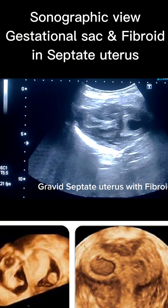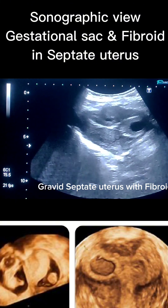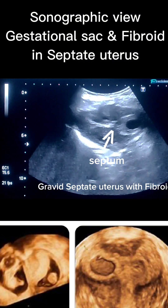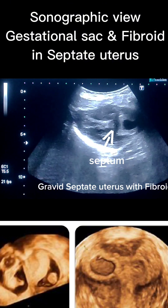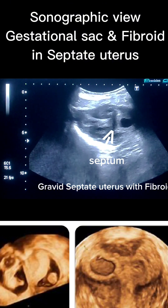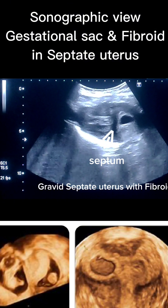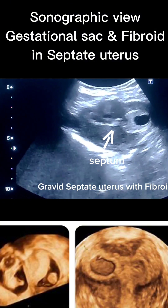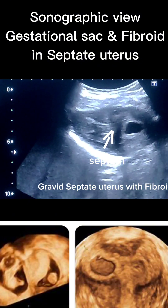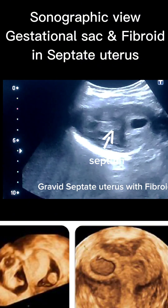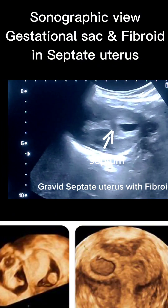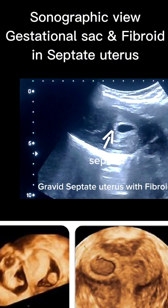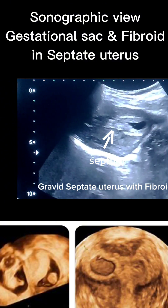On scanning, the uterus appeared abnormally shaped with a fibrous echogenic band running along the midline of the endometrial cavity, partially dividing it into two horns. This is a classic feature of septate uterus, a Mullerian duct anomaly and often implicated in recurrent pregnancy losses.